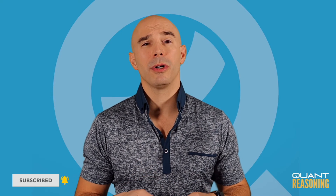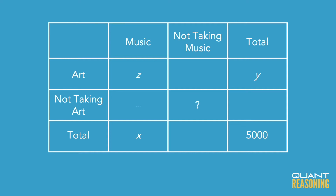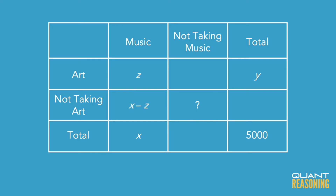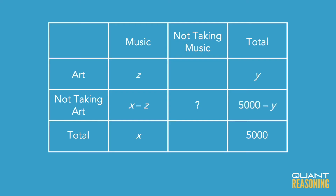Our question wants to know how many students take neither music nor art. We can infer that the number of students who take music but not art is x minus z. And similarly, the total number of people who don't take art is 5,000 minus y. So the thing we're trying to solve for is the difference between (x − z) and (5,000 − y).